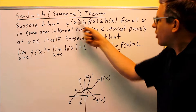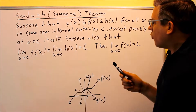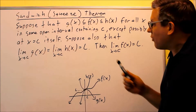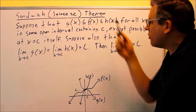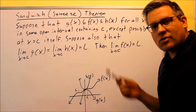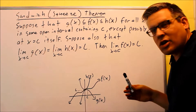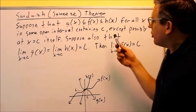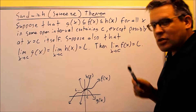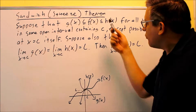If you can find two other functions where you can sandwich f of x in between them and you can find the limit of those two easily, then you can automatically find the limit of the middle one. So first let's talk about the setup: you're setting it up so that your f of x is going to be in between these two functions.